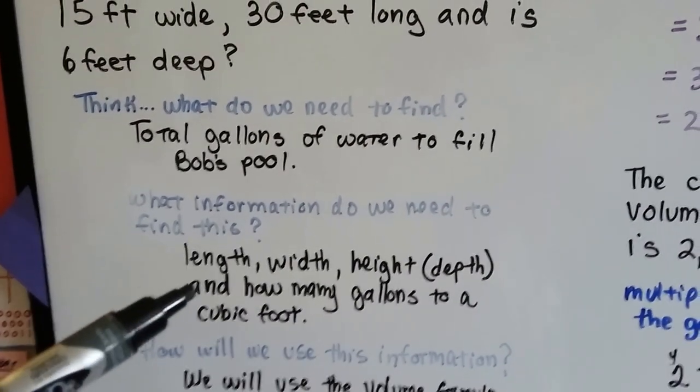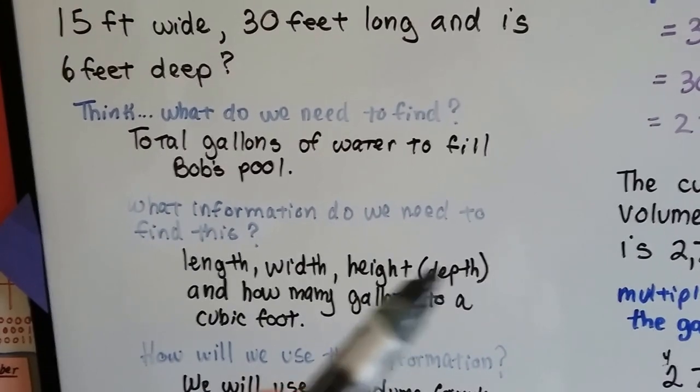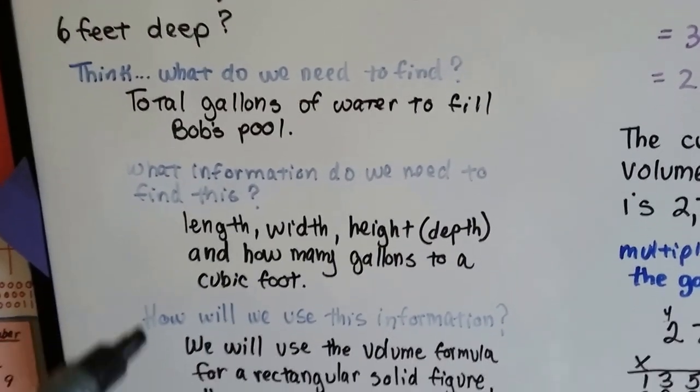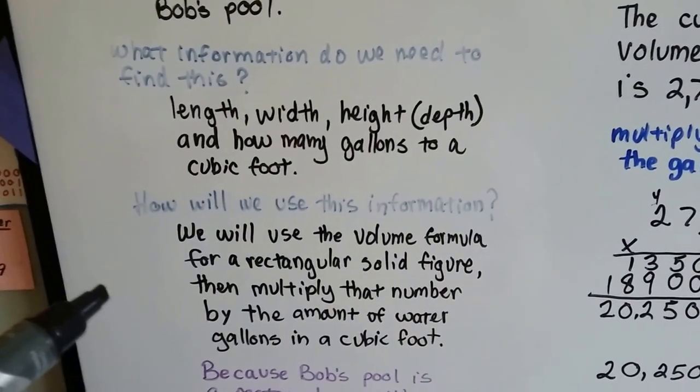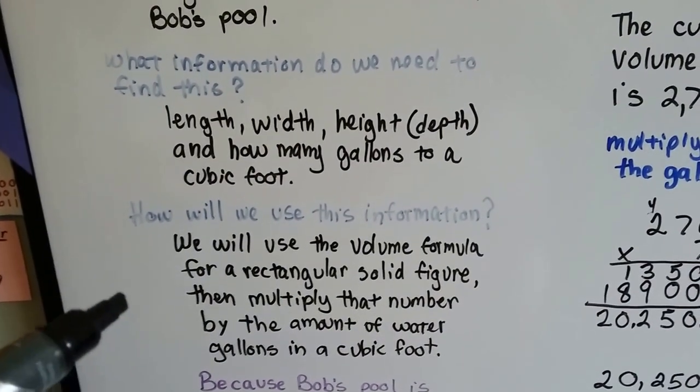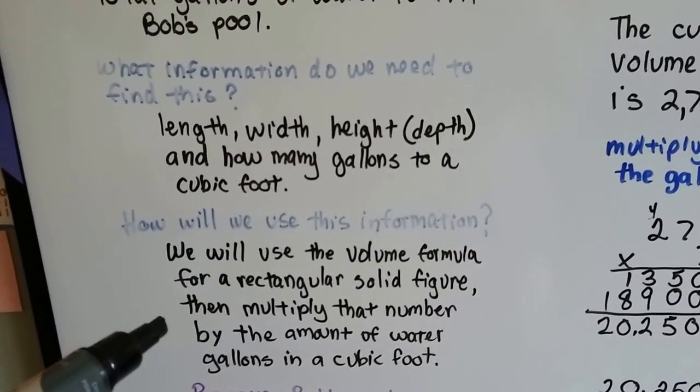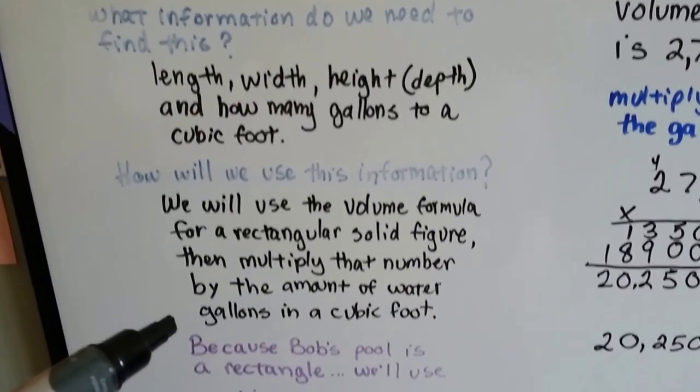We need the length, width, height, which we're going to use for the depth for how deep his pool is, and how many gallons there are in a cubic foot of water. How will we use this information? Well, we'll use the volume formula for a rectangular solid figure, then we'll multiply that number by the amount of water, gallons in a cubic foot.